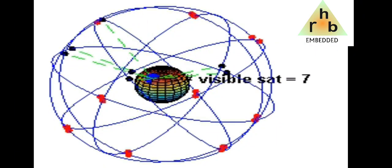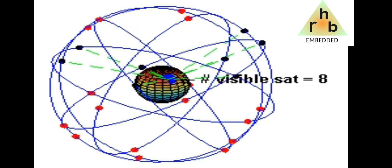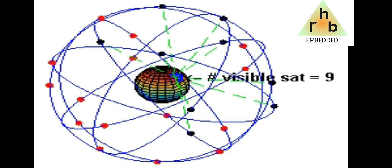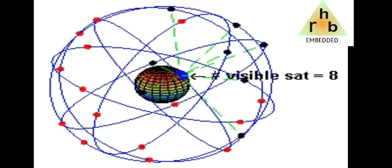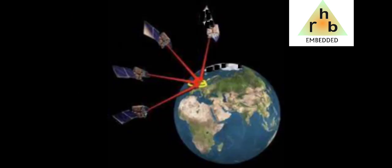GPS is a system of 30 plus navigation satellites circling the Earth. We know where they are because they constantly send out signals. A GPS receiver in our module listens for these signals. Once the receiver calculates its distance from four or more GPS satellites, it can figure out where we are.